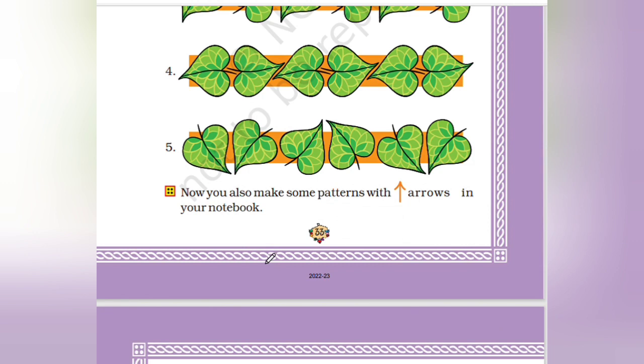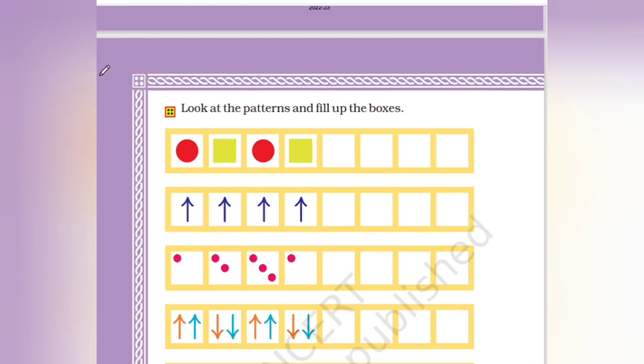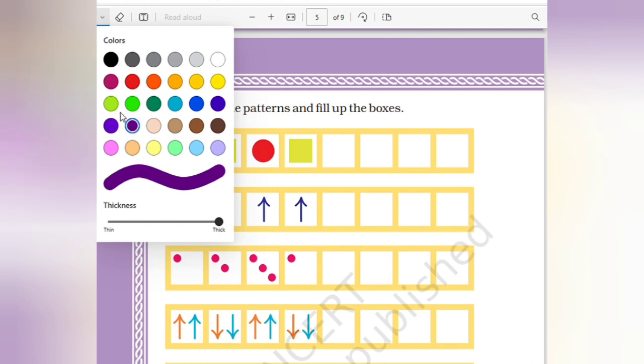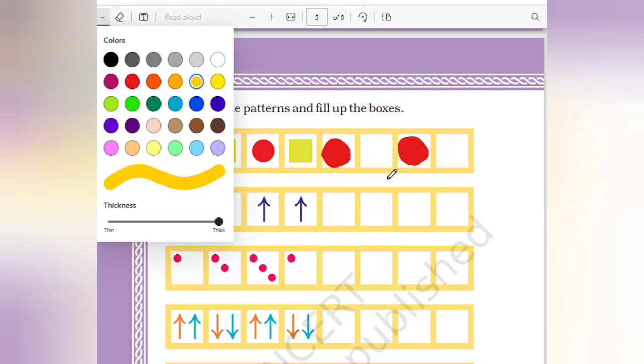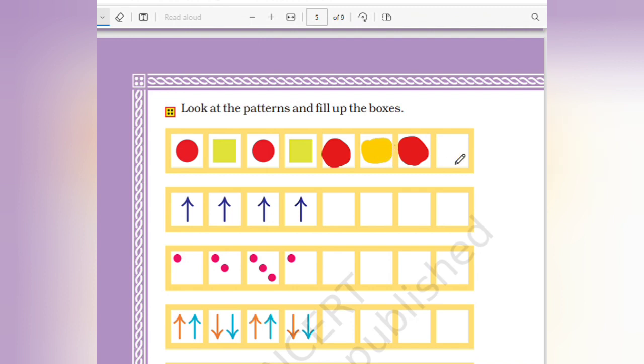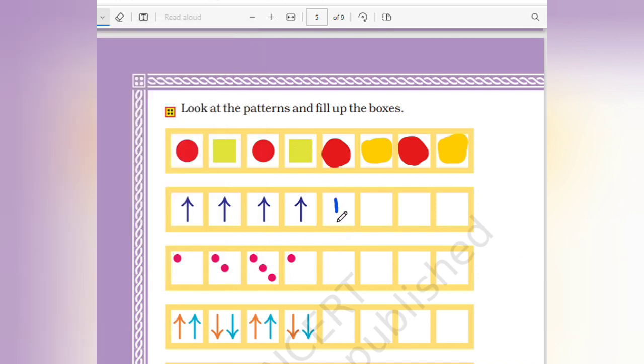Now you also make some patterns with the arrows in your notebook. Arrows which are different patterns. Here what is given, here a circle, a square, then a circle. Square, square, square, arrow marks.